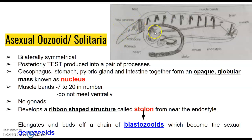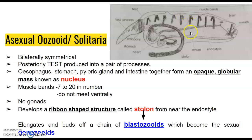The esophagus, stomach, and pyloric glands are all enclosed as an opaque globular mass called the nucleus. The body has 7 to 20 incomplete muscle bands that do not meet on the ventral side. The organism does not have any gonad at this stage. Instead, it develops a ribbon-like structure called the stolon.